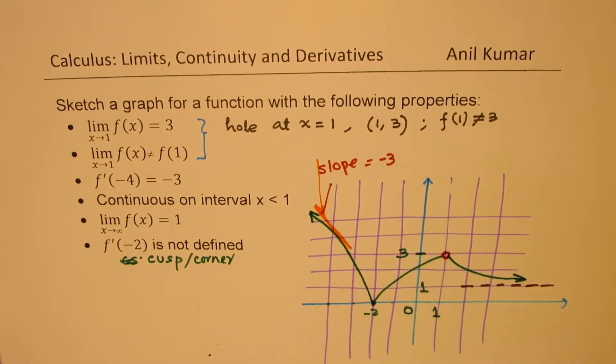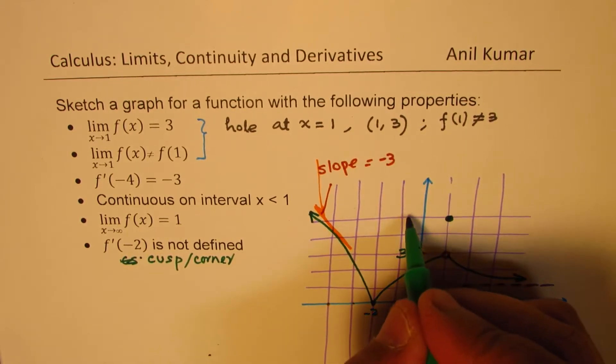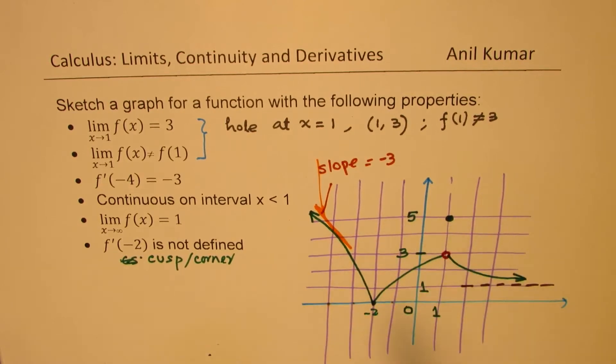Now, it also says that the value of the function is not equal to this. So we could give some value at this point. Let's say we give a value here. So at 1, the value could be 5. For example, we have a hole at 1.